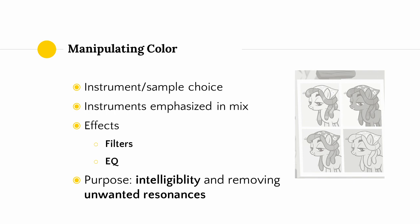As producers, we can control the color of our songs based on what instruments we choose to use, what instruments we choose to emphasize in the mix, and the use of digital effects. The primary effects we use for manipulating frequency content, or color, are filters and EQ. We primarily do this to ensure that instruments we want to be intelligible are intelligible, and to remove unwanted resonances from our sounds.